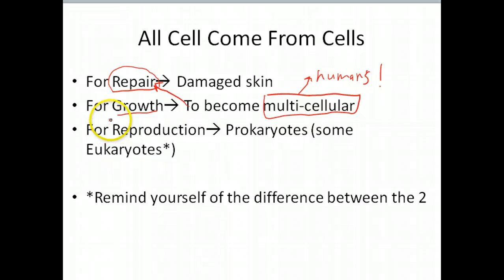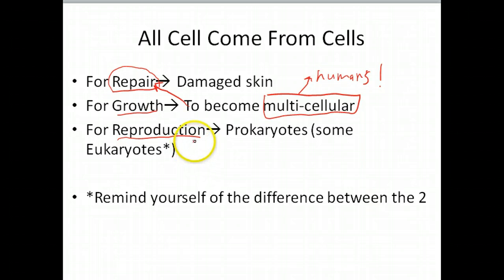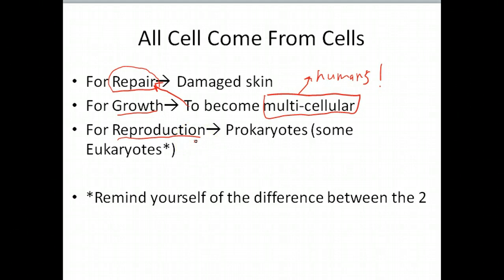For asexual organisms, like many prokaryotes, you're going to see that this cell division is actually a form of reproduction. For prokaryotes, like bacteria cells, simply duplicating their genetic material is all they have to do to reproduce. They duplicate that genetic material and they split off, and you go from having one unique organism to having two. So it's essentially a duplication.